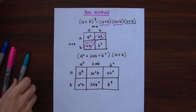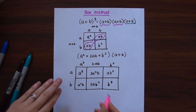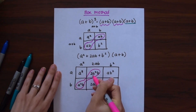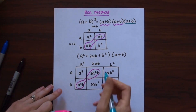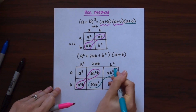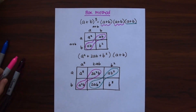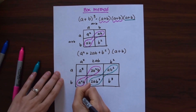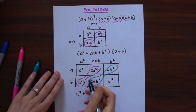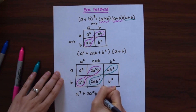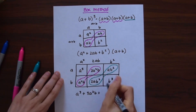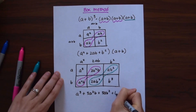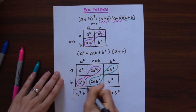So again we have some like terms to combine. We have a²b plus 2a²b, and we also have 2ab² plus ab². So combining everything: we get a³, plus 3a²b, plus 3ab², and then b³. And that's our answer.